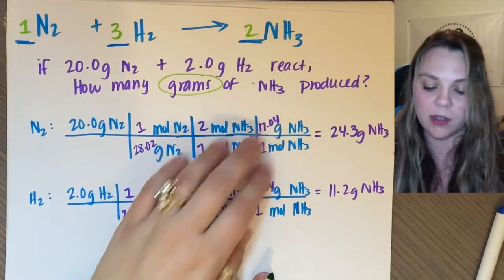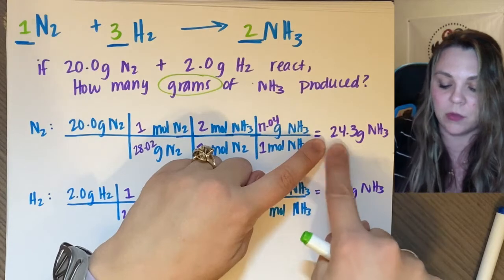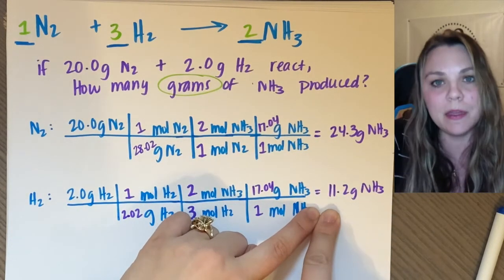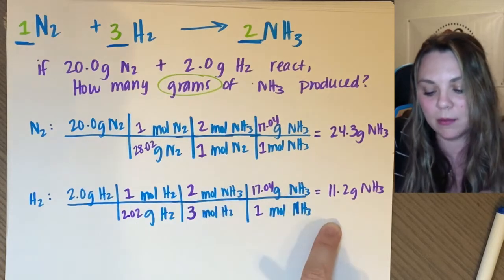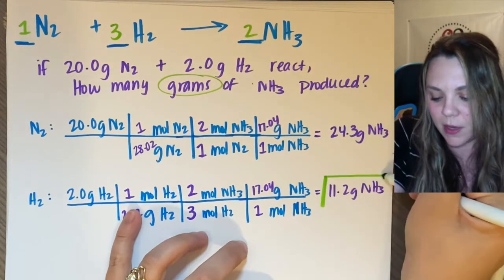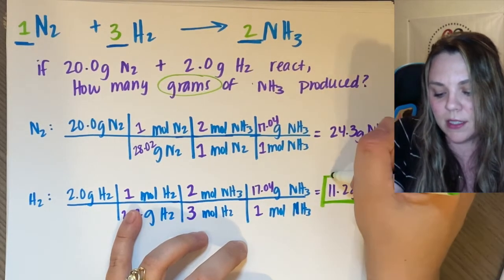So my question is, how many grams of NH3 are actually produced? Of my possibilities, 24.3 or 11.2. This is limiting reactant. So I'm limited. I pick the smaller number. Chemistry golf, baby. Smaller number wins. So this is my answer.